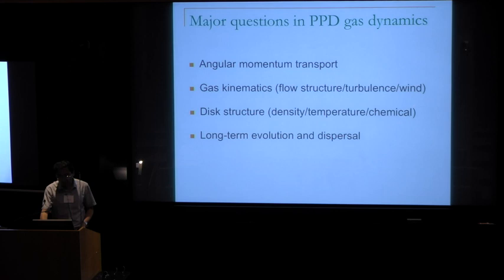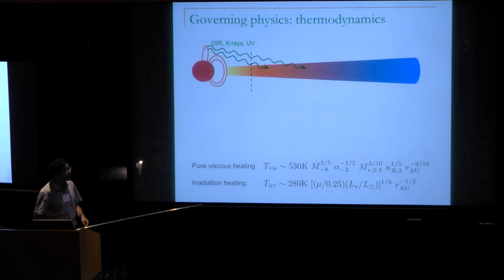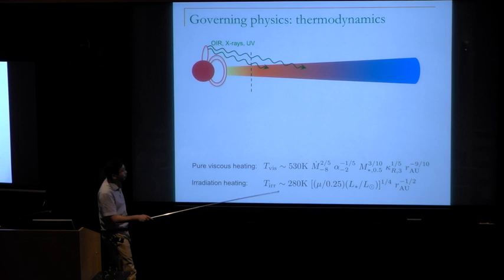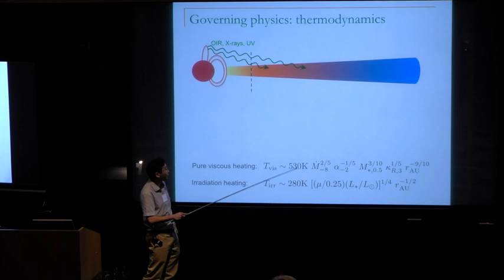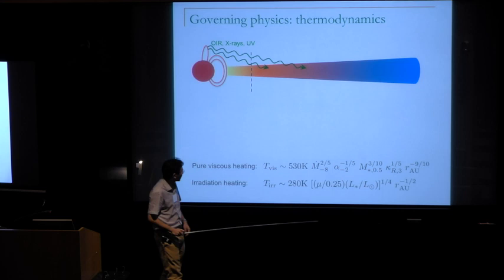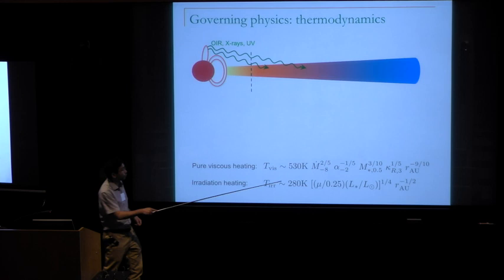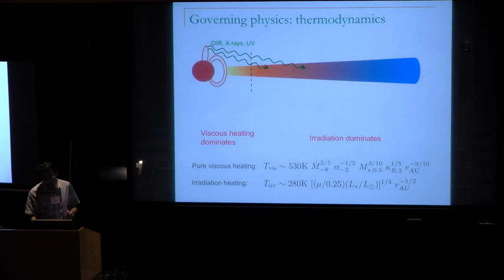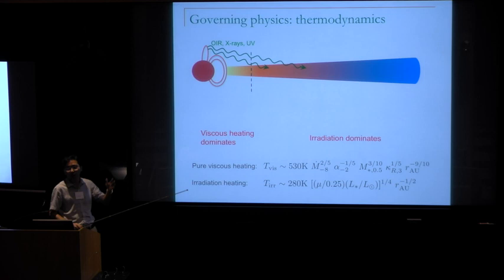Before we really start, let's talk about the governing physics in gas dynamics. Starting from thermodynamics: if you naively assume that the disk is viscously accreting, and given a typical accretion rate of 10⁻⁸ solar masses per year, with typical opacity and mass, you arrive at a mid-plane temperature of order 500K at 1 AU, going roughly as r⁻¹. Meanwhile, the disk is heated by stellar irradiation, and the irradiation temperature is something like 300K-ish but decreases much more slowly. So the bulk of the disk has to be irradiation dominated — the temperature is mostly set by irradiation.